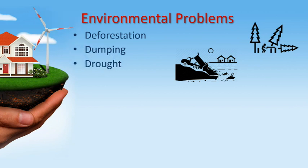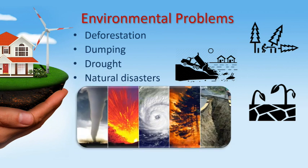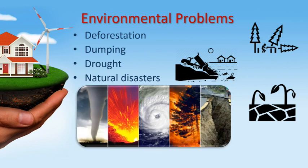Drought is another real problem. Drought means scarcity of rain and shortage of water. And finally, natural disasters, including tornadoes, volcanoes, hurricanes, fires and earthquakes.